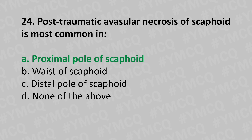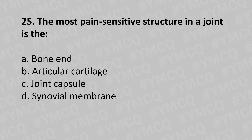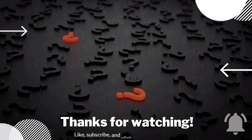Moving to our 25th question: the most pain-sensitive structure in the joint is — option A bone, option B articular cartilage, option C joint capsule, option D synovial membrane. And the answer is option C joint capsule. That's all for today; if you need clarification for any of the questions, do comment in the comment box. I'll be back with part two of this series tomorrow, so please subscribe to this channel.